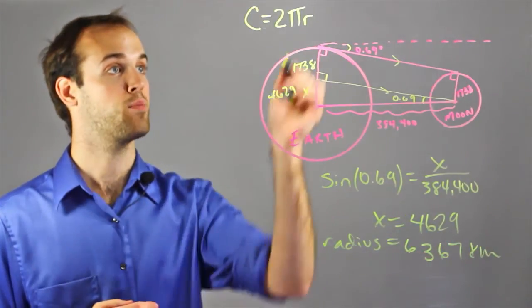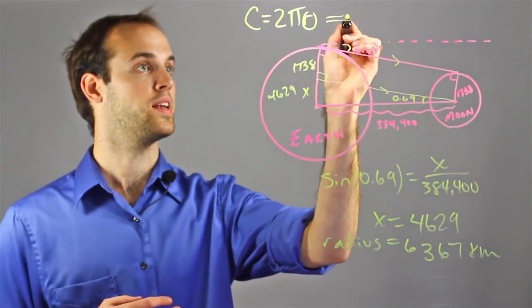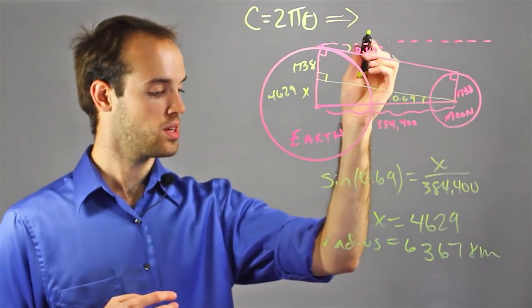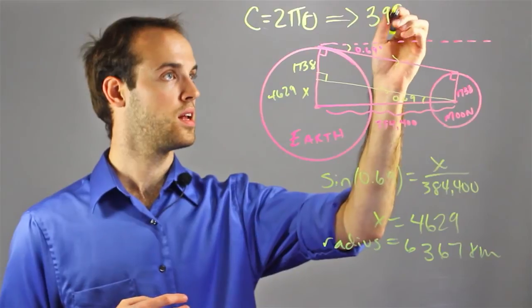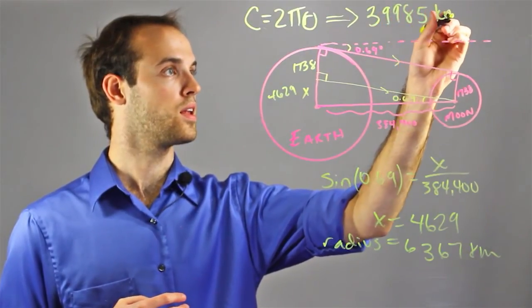So now I have my radius that I was missing to solve for the circumference, which I'm going to be able to put in now. And it equals about 39,985 kilometers.